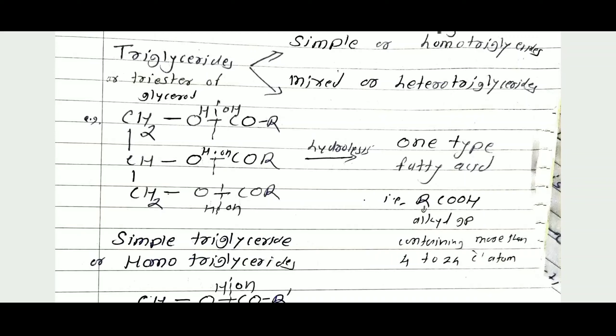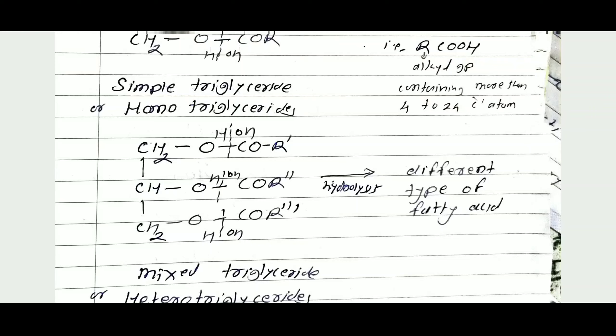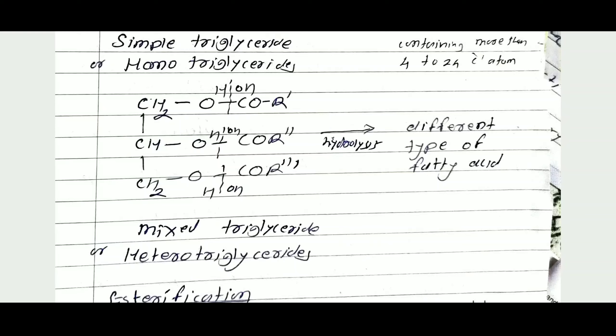Another type is the hetero triglyceride. Hetero triglyceride means on hydrolysis it gives more than two types of fatty acids. In mixed or hetero triglycerides the fatty acids are different, and glycerol is the alcohol. Glycerol may react with different types of fatty acids to form mixed triglyceride or hetero triglyceride. Therefore on hydrolysis it gives different types of fatty acids. Homo triglyceride gives only one type of fatty acid on hydrolysis, and hetero triglyceride gives different types of fatty acids.